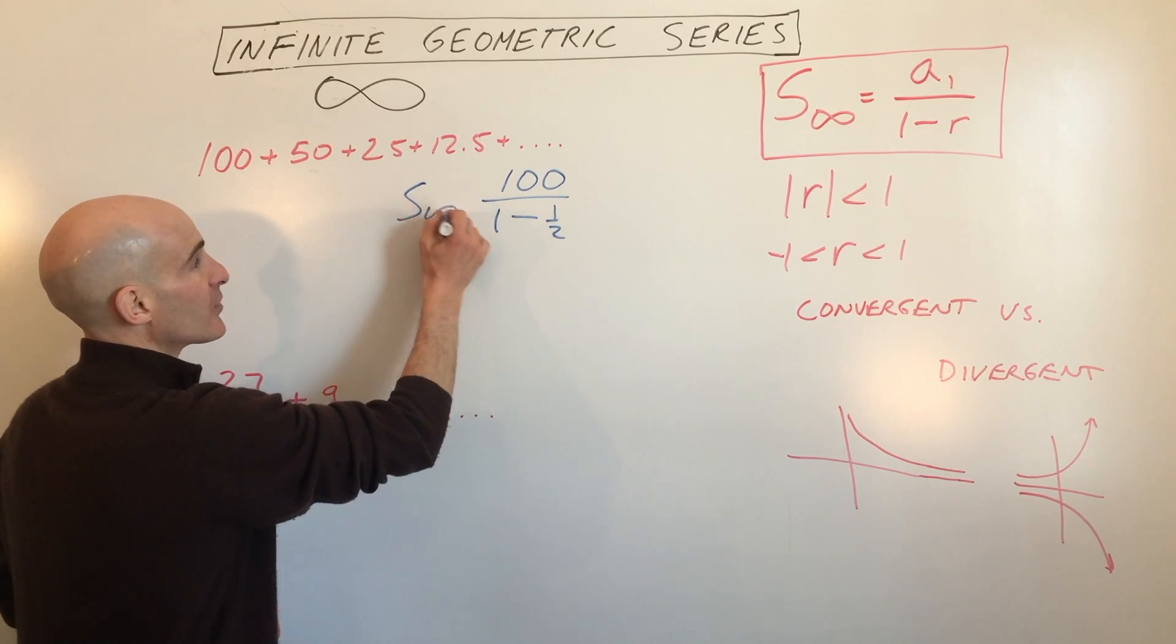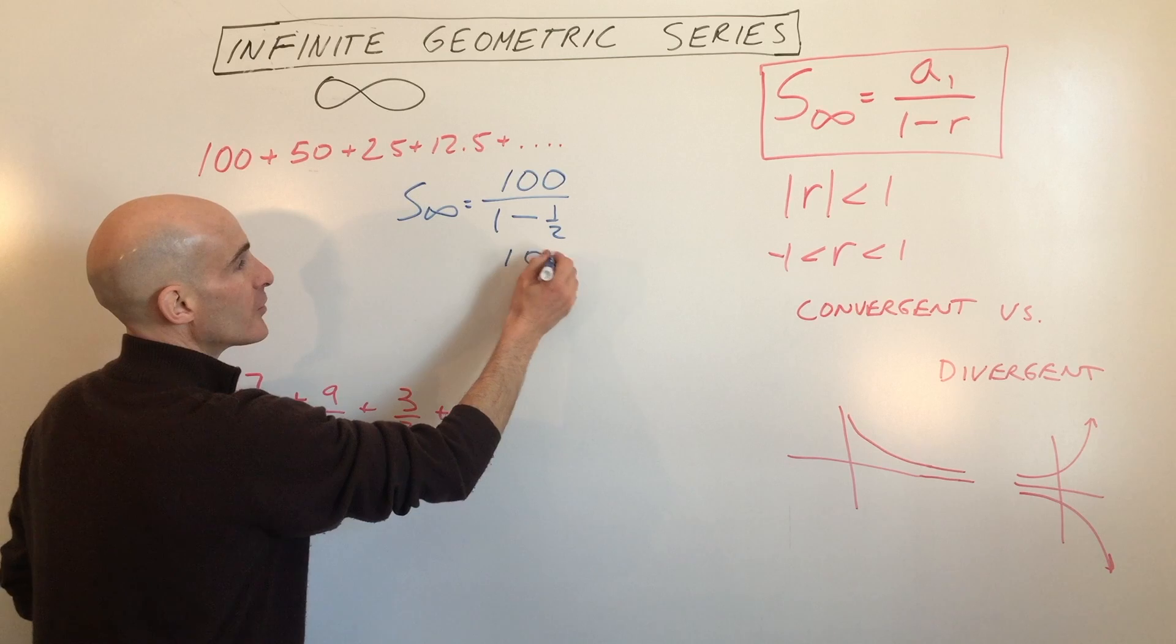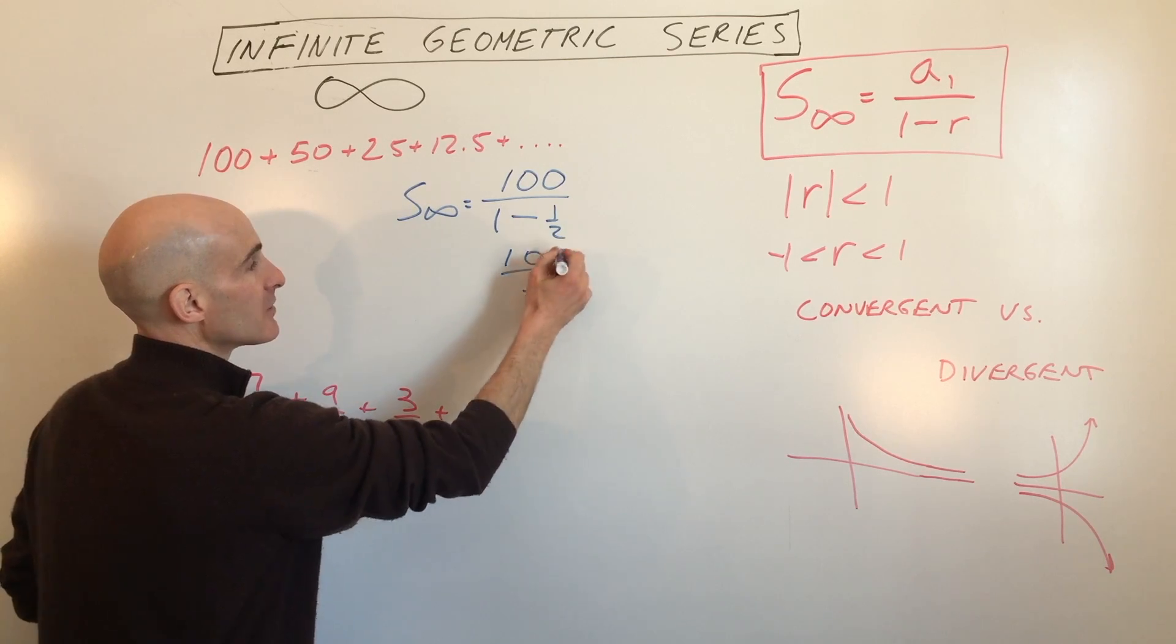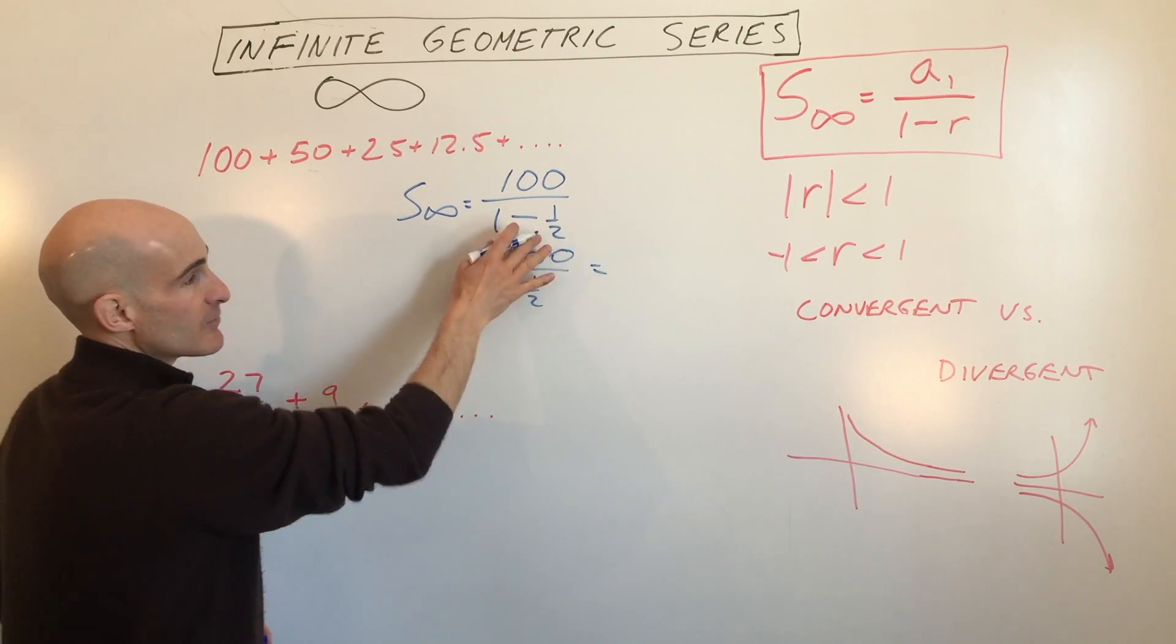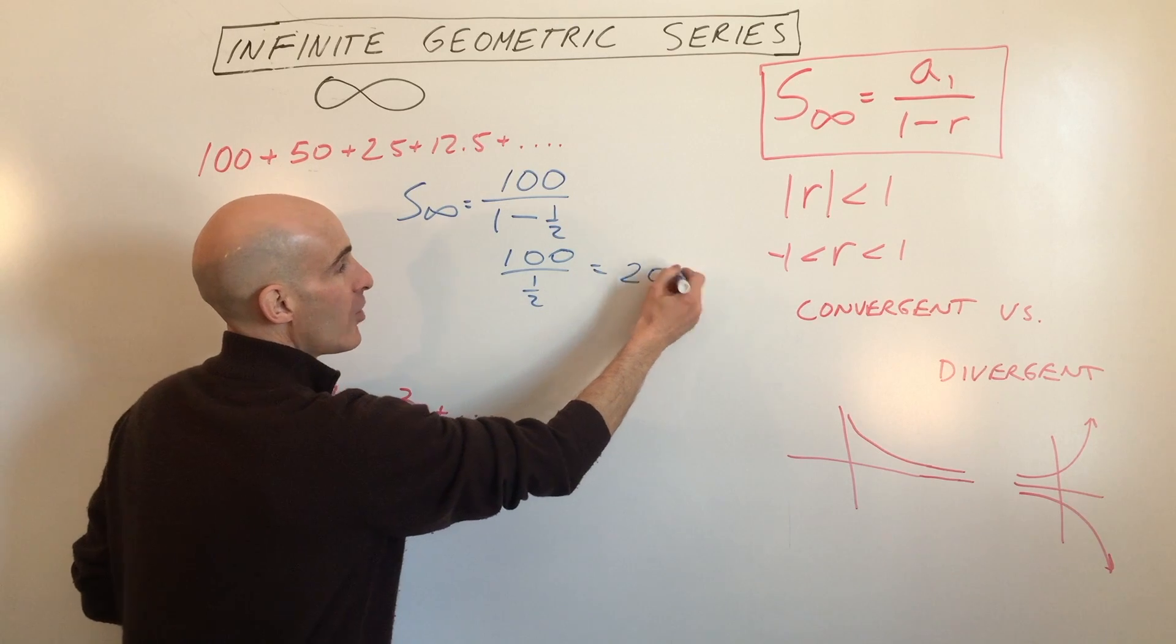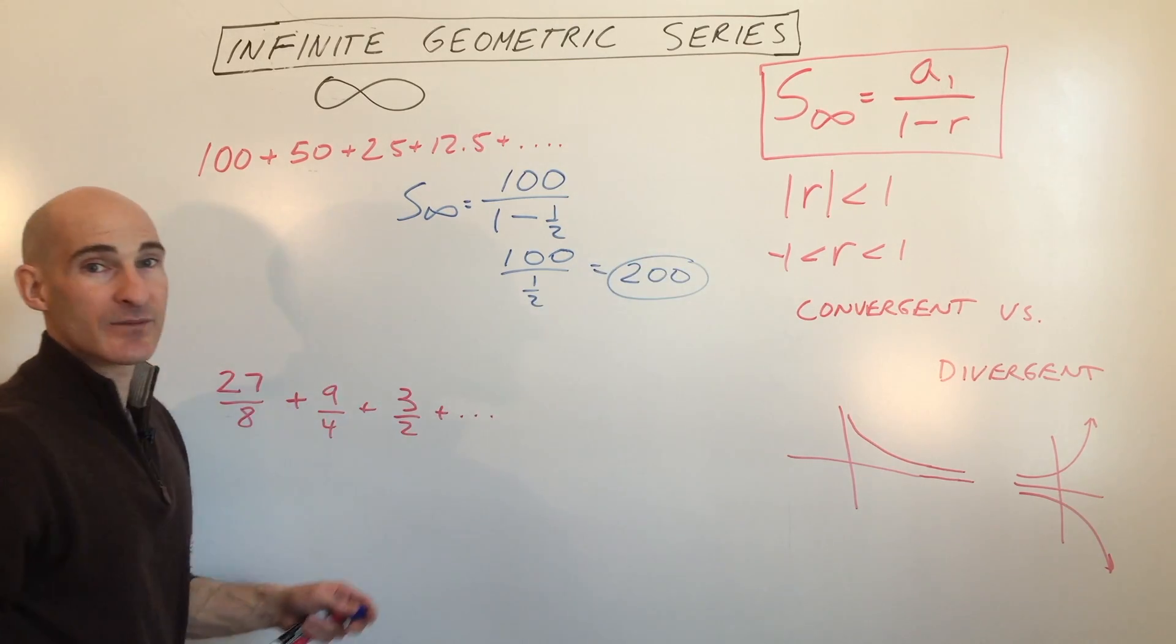So what we get for our sum, our infinite sum, is 100 divided by 1 half. When you divide by a fraction, it's like multiplying by the reciprocal. So the sum of all these terms, they're going to add up to 200.